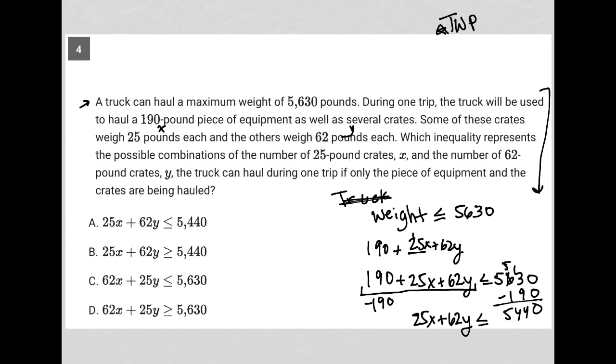And let's see where that answer is. That is, looks like that's choice A, 25X plus 62Y is less than or equal to 5,440. So that's our correct answer.